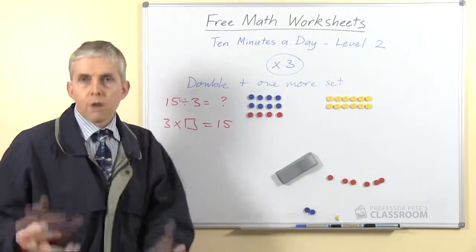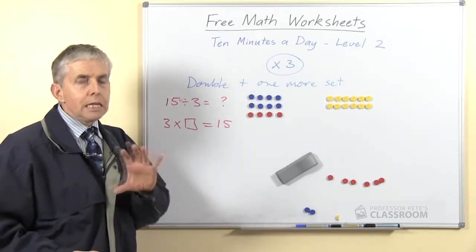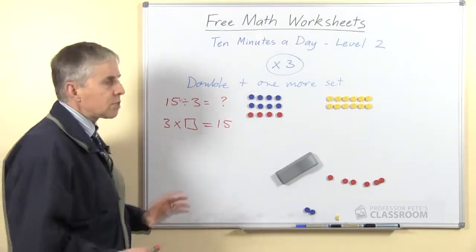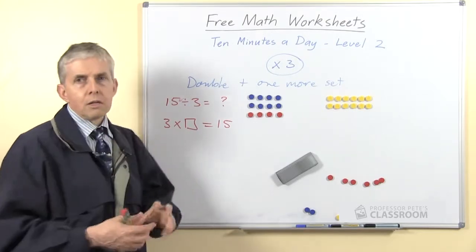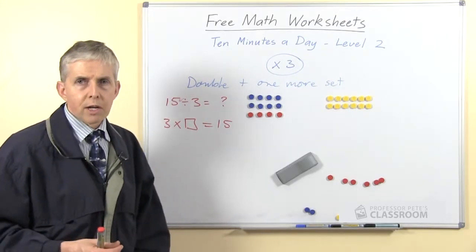3 fives are 15. That's clearly too slow, and we certainly don't want students to do that every time they have to answer a number fact.